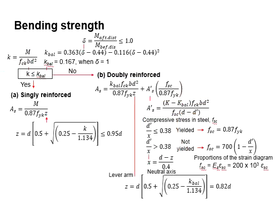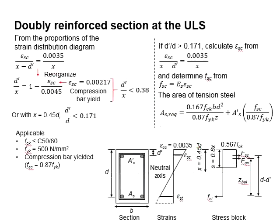There are two ways for you to determine whether the compressed steel bar has yielded. It is either in the ratio of d' per x or in the ratio of d' per d. Either one is applicable.